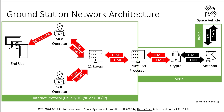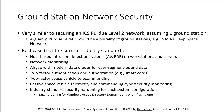Obviously each mission may modify the ground station — this diagram is an example that encompasses most environments. As a counter example, in the case of GPS, payload data doesn't go from the MOC to the end user; GPS transmits a radio signal directly from space to the end user. So there are differences depending on the mission type. This diagram is not comprehensive or written in stone, but it is generally accurate for most environments.